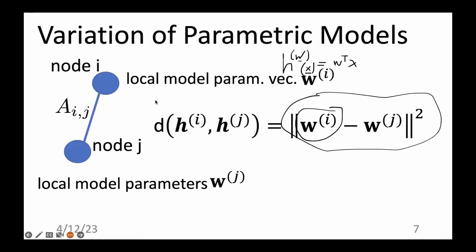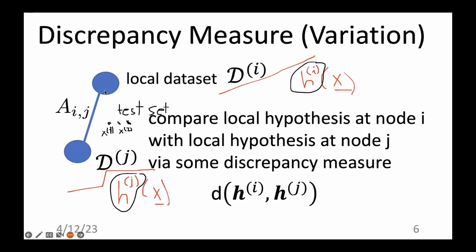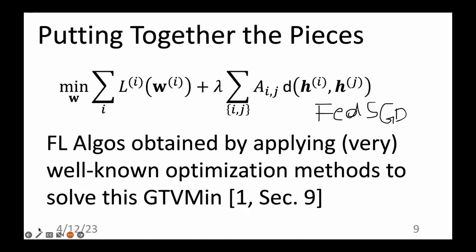Another option is to have complete freedom with heterogeneous mixtures of local models — some nodes with decision trees, others with linear models, yet others with deep neural networks. For such heterogeneous local models you might stick with the test set option to measure discrepancy. In the current coding assignment you learn about another optimization algorithm called FedRelax, which can be applied to such heterogeneous local models.